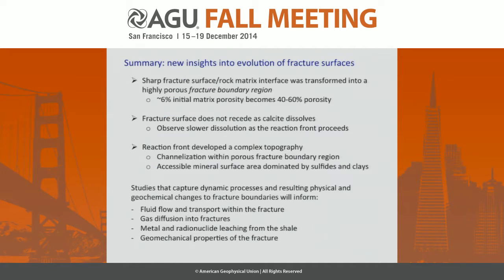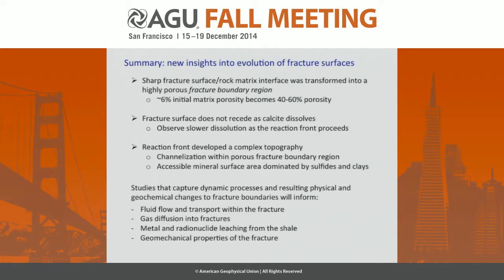In summary, we saw with this method that this sharp interface was transformed into a highly porous boundary region. The fracture surface does not recede as the calcite dissolves, but instead leaves behind a network. We see a slowing of the dissolution rate as that front proceeds. This reaction front developed a really complex topography, with channelization within this boundary region and accessible mineral surface area dominated by sulfides and clays.